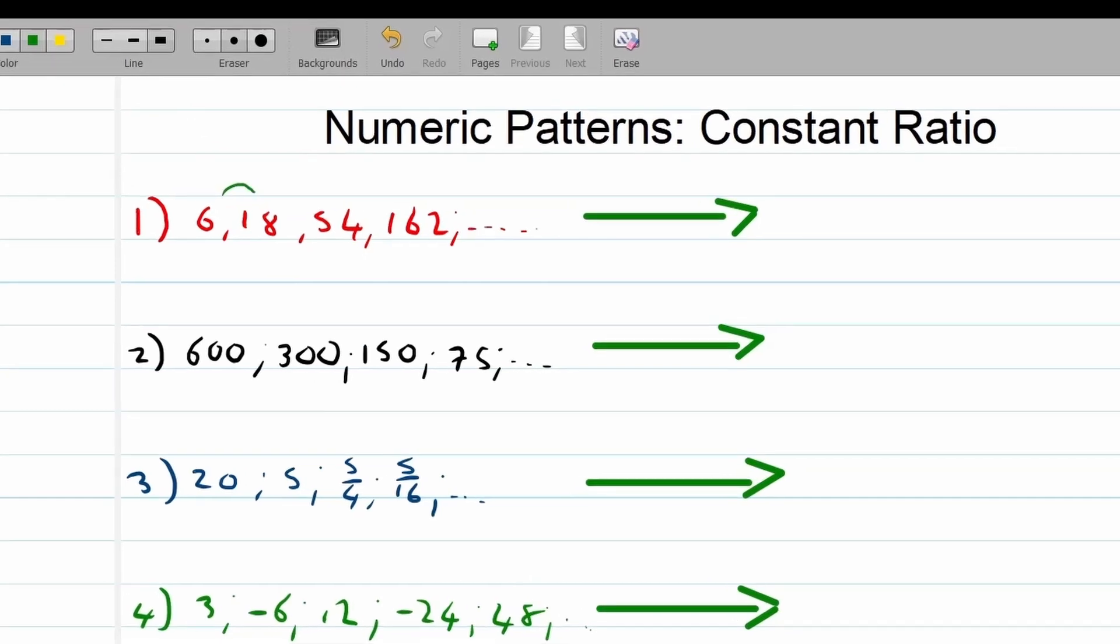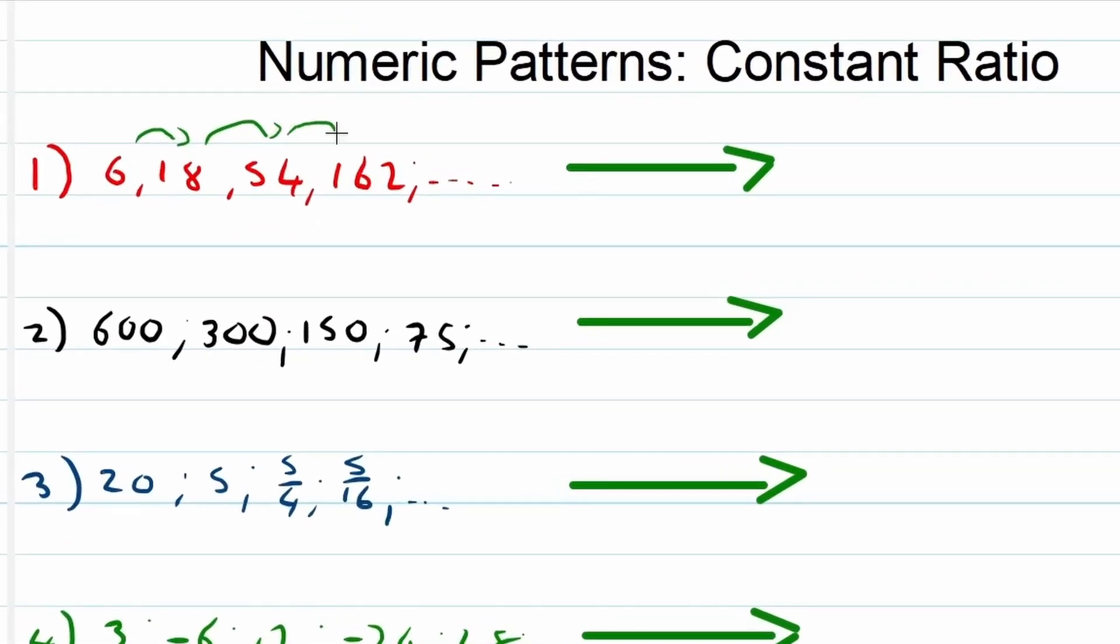Let's look at example 1. To go from 6 to 18, and again from 18 to 54, and 54 to 162, you have to multiply with 3 every time.